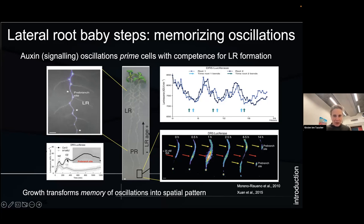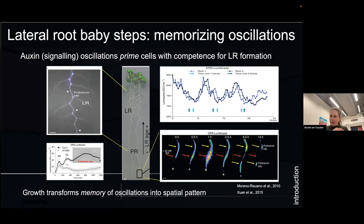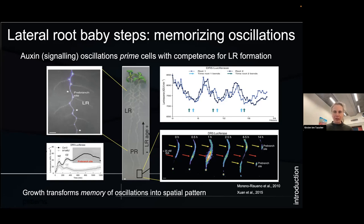You also see that there is high auxin in the meristem — what cells need to divide — then periodic high auxin in the oscillation zone, dipping, and then going up again when a pre-branch site forms. This implies that cells must be primed, but a secondary process must be invoked to give the memory and allow a cell to memorize that it is primed and might form a lateral root.